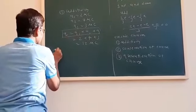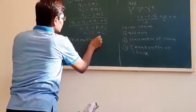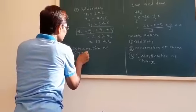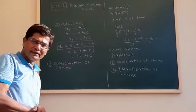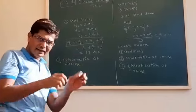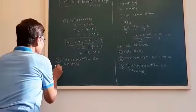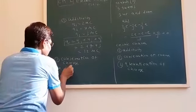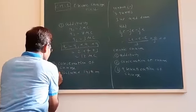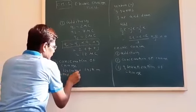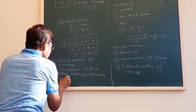The second property is conservation of charge. What is conservation of charge? It says that in any electrically isolated system, the total charge remains constant.